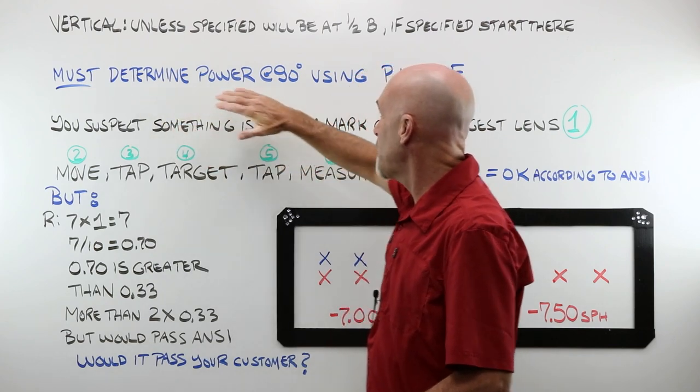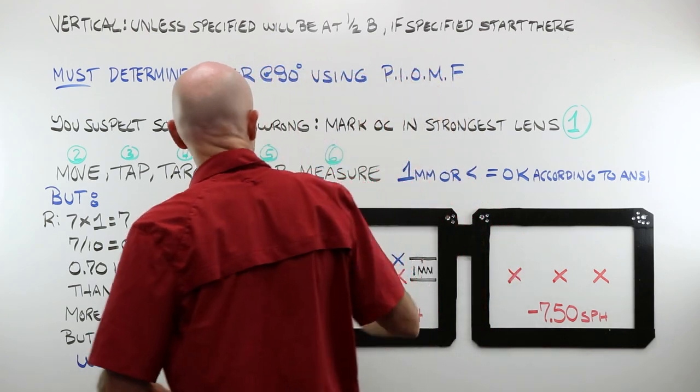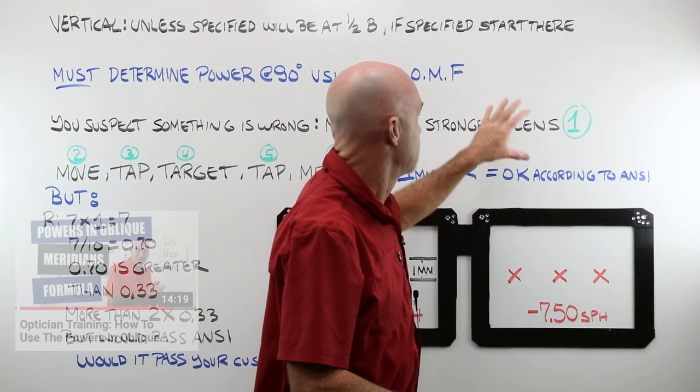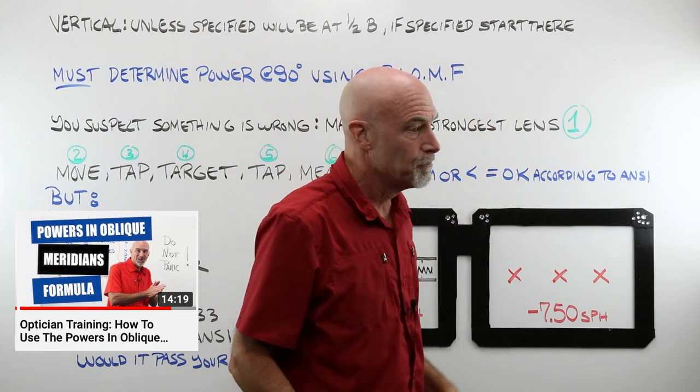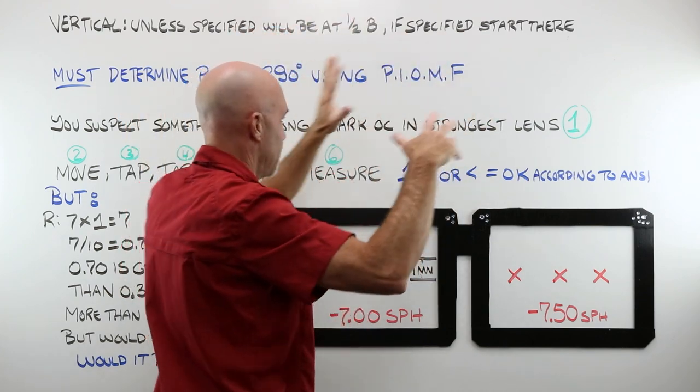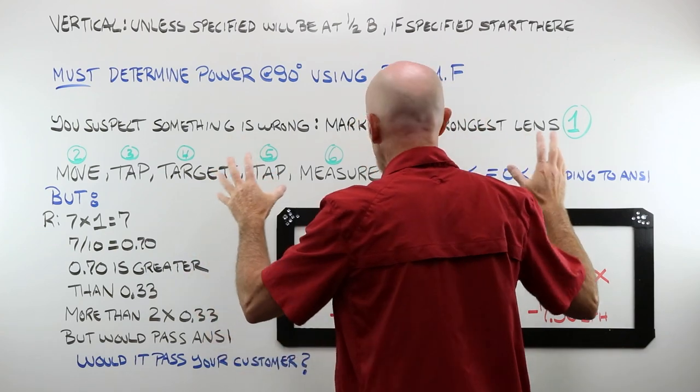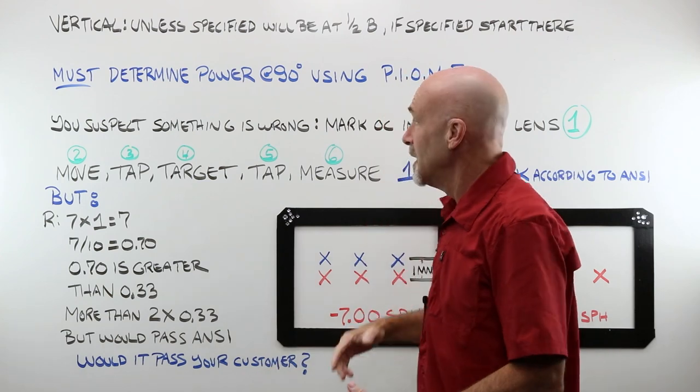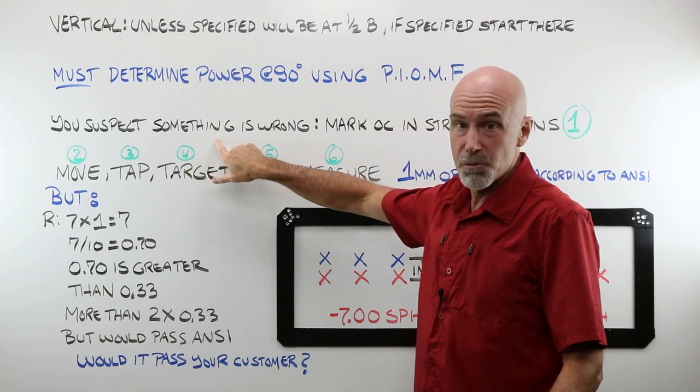Okay. We must determine the power at 90 for vertical imbalance issues. We do that using the powers in oblique meridians formula. There's a video for that. There's some apps that are available to calculate that for you. Again, if you don't understand even what that is and why you would do that, then you're kind of in the wrong place at this point. We would not be looking at this. We would not be talking about this. We would not be trying to apply a guideline, a standard or a tolerance or measure anything if we didn't think that something was wrong.